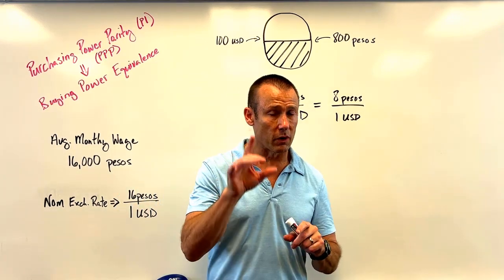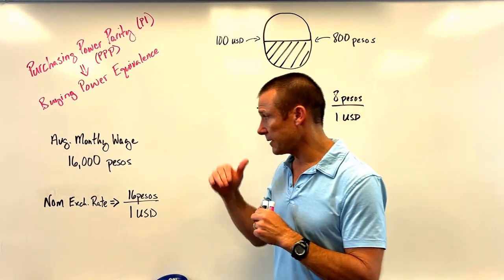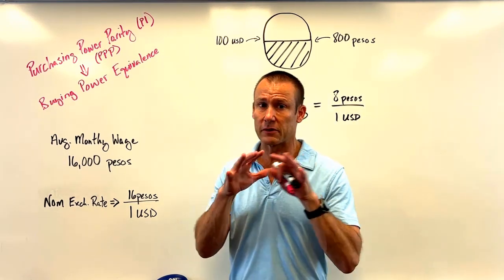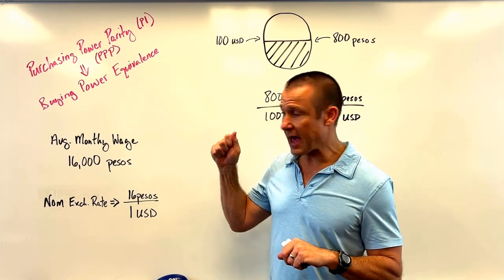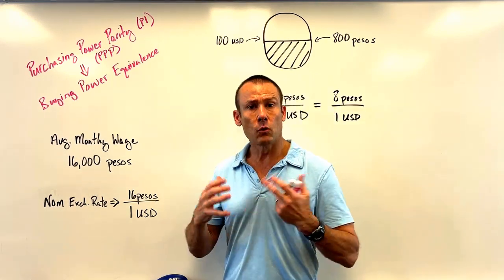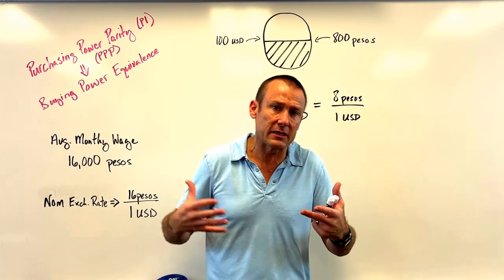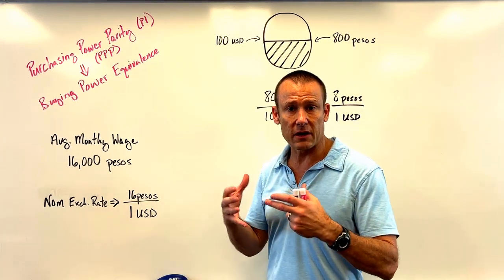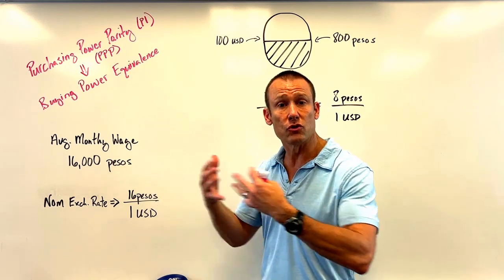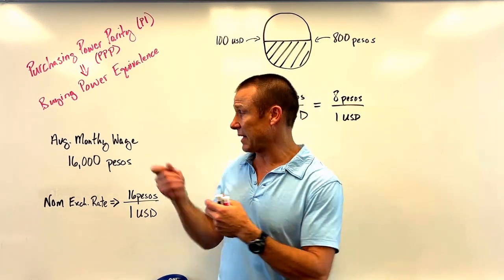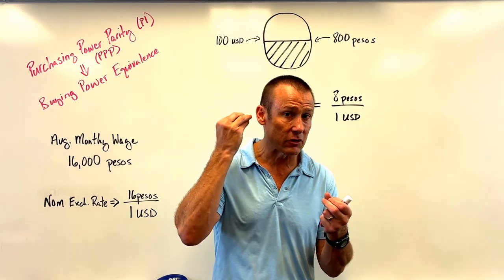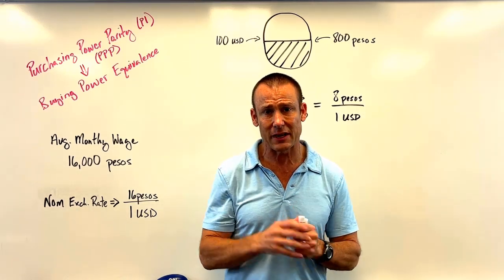Now let's use PPP for conversion. This is conceptual data just for illustration. We're going to say the average monthly wage of a laborer in Mexico is 16,000 pesos. We want to understand what that means — especially for people who think in USD — because pesos aren't as well understood as USD. We want to convert this to USD to understand what standard of living that wage provides for a worker in Mexico.